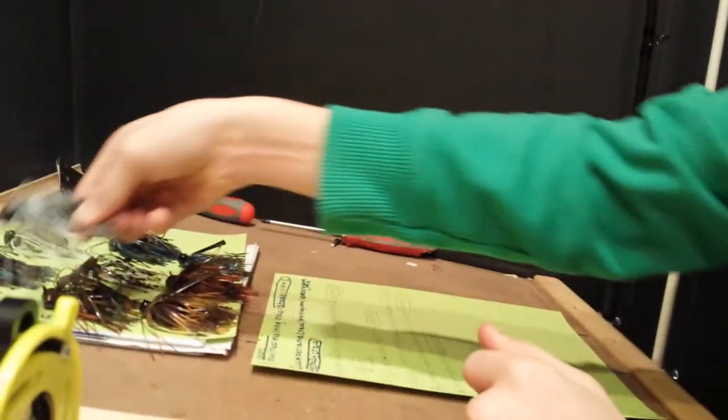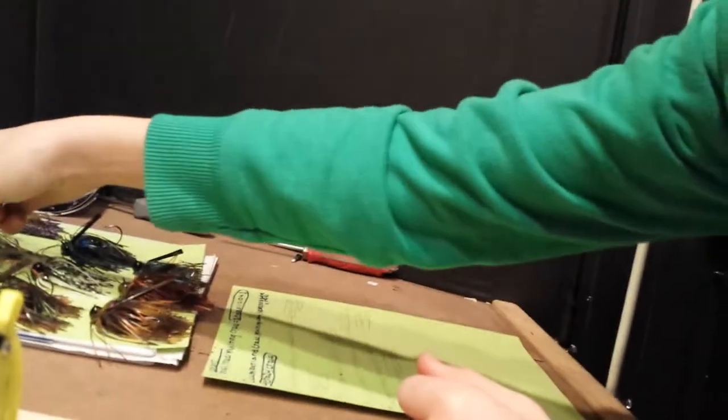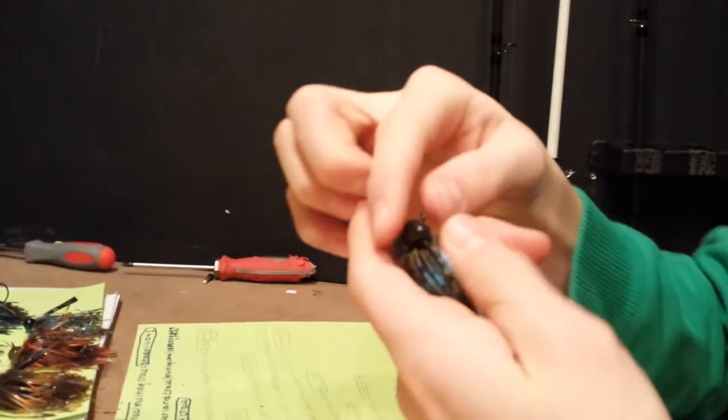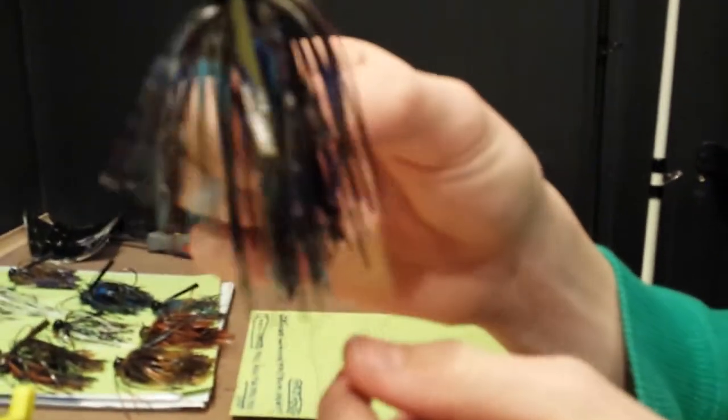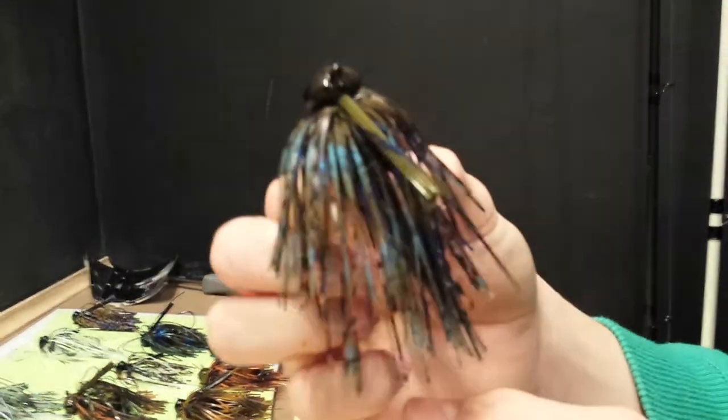Next one we have here is called Crazy Craw. This is a 3.8 ounce head, green pumpkin black. Crazy Craw there.